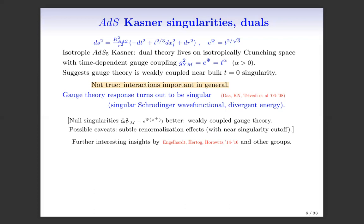Null singularities turn out to be better. For null singularities, the gauge coupling has light-like dependence on a light-like coordinate, and one can argue that one obtains a weakly coupled gauge theory, though there are possible caveats having to do with subtle renormalization effects and a possible near-singularity cutoff. I will now change tracks and talk about realizations of cosmologies in two-dimensional dilaton gravity theories, which have more to say about entanglement structures in particular.